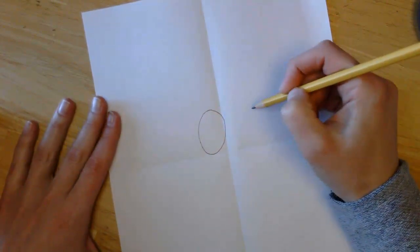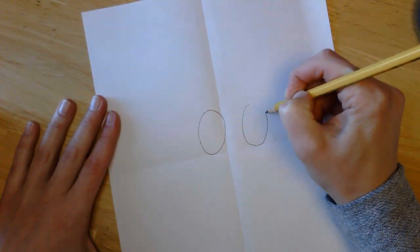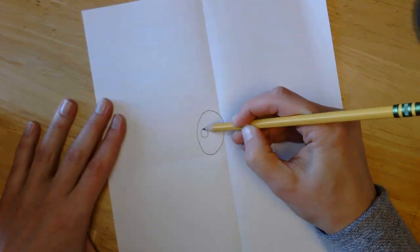We're going to do the eyeballs first. Then I want you to go over, you're going to draw me another eyeball. Inside, you're going to draw me a circle on both sides.